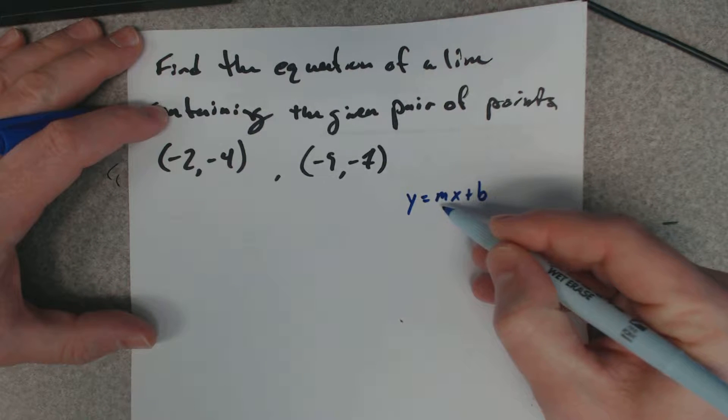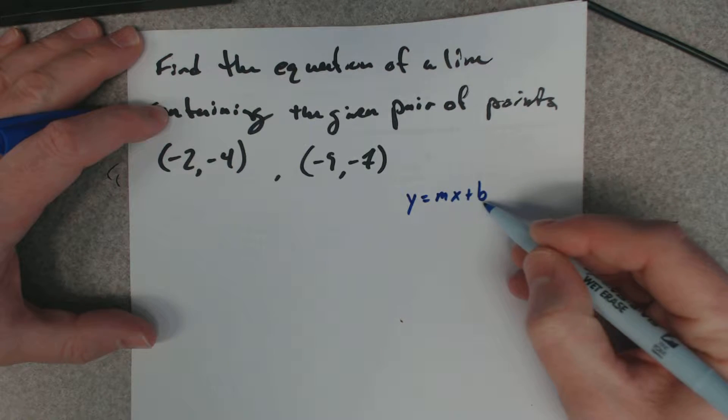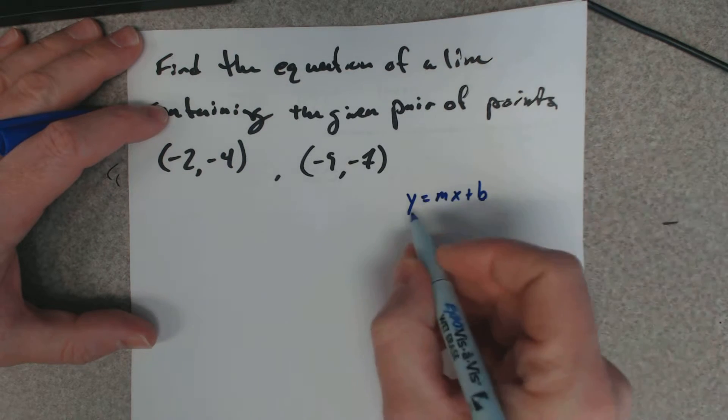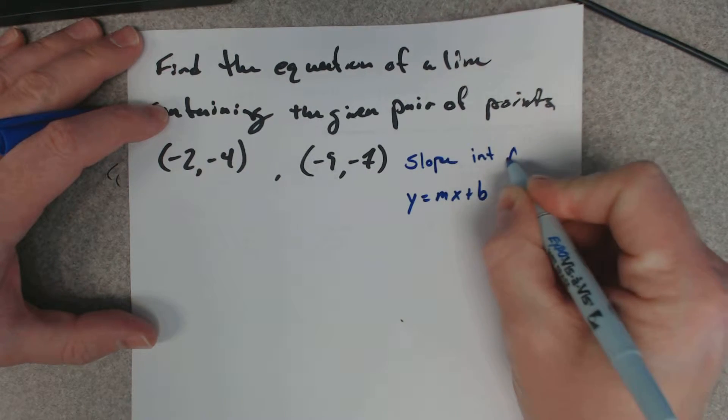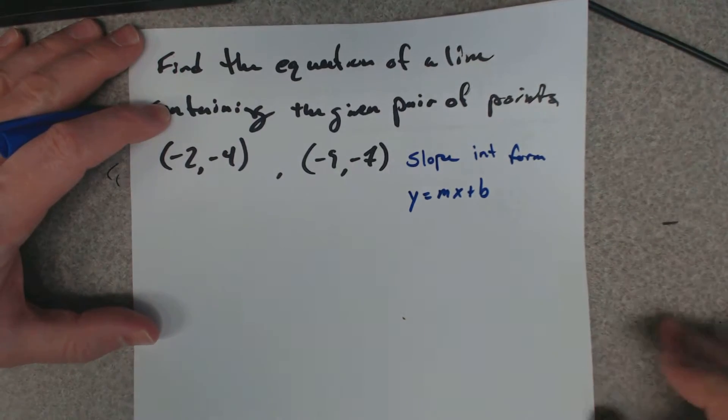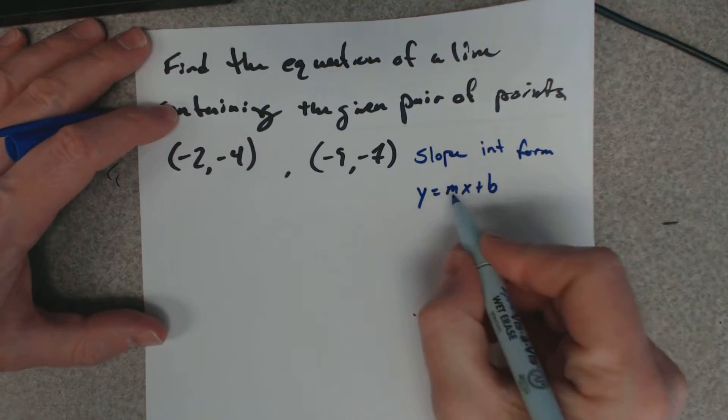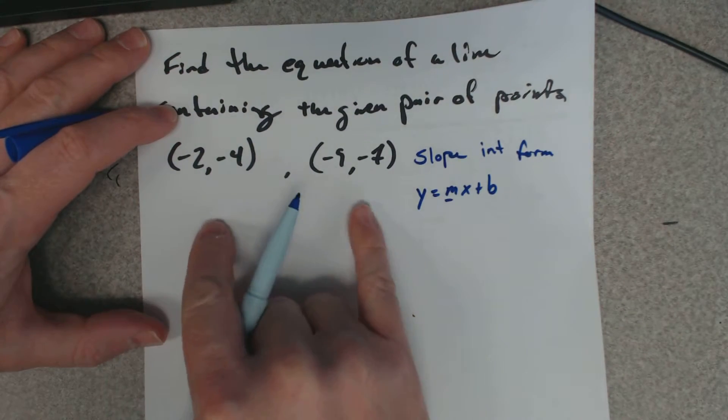Where m is the slope of the line and b is the y-intercept. This is called slope-intercept form.